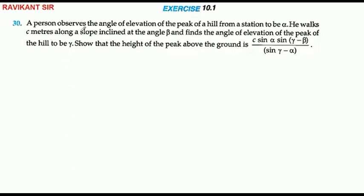A person observed the angle of elevation of the peak of a hill from a station to be alpha. He walks c meters along a slope inclined at angle beta and finds the angle of elevation of the peak of the hill to be gamma. We need to prove the height of the peak above the ground.